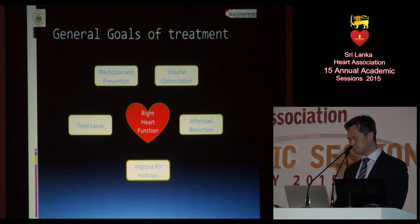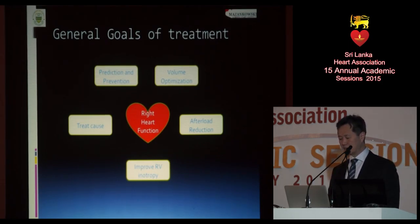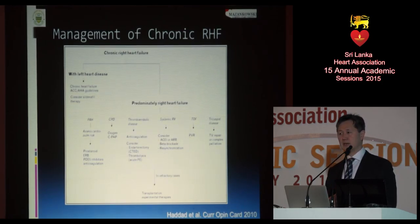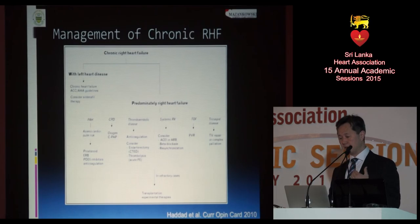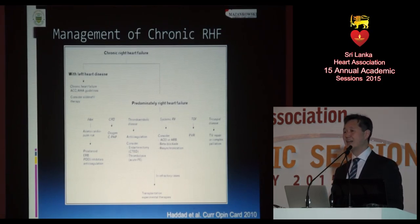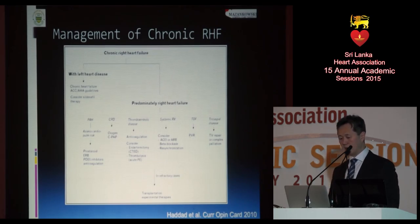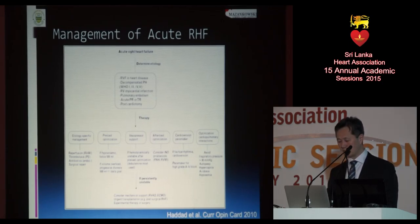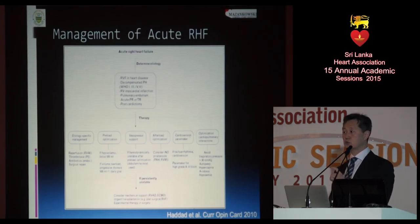In the last few minutes I'll talk about management. The goals are fairly simple: volume optimization, afterload reduction, improving right ventricular inotropy, and treating the underlying precipitating factor or cause. In chronic right heart failure, the biggest thing is — if there is concomitant left-sided disease, treat that per guidelines; otherwise look for the underlying cause, whether pulmonary hypertension, tetralogy of Fallot, or a systemic RV, and treat that. That is probably the best long-term approach. It is in the acute setting where things become more difficult, as there is very little data.